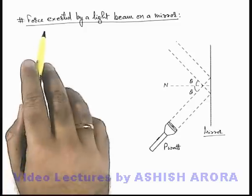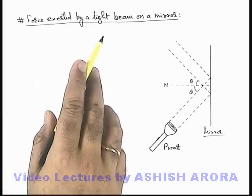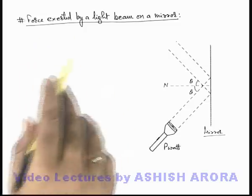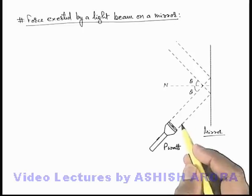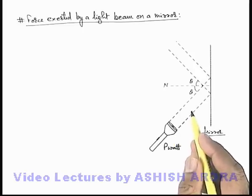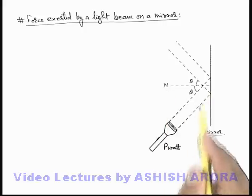Let us now calculate the force exerted by a light beam on a mirror. The situation is shown here in the figure where there is a vertical mirror on which a light source projects a straight beam of light.